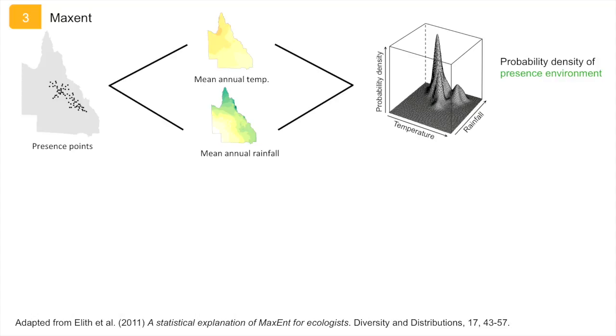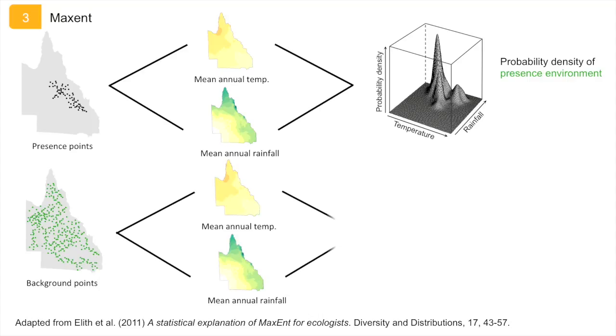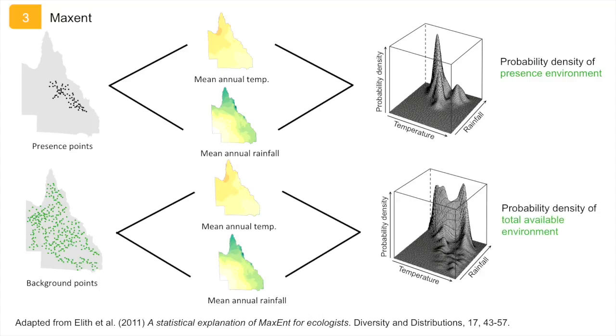The same is done across the entire study region based on the background points. So the probability density of the background points characterizes the available environment within the study region, whereas the probability density of the presence points characterizes the environment where a species has been found.